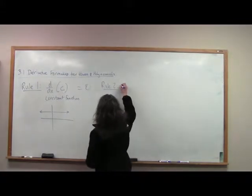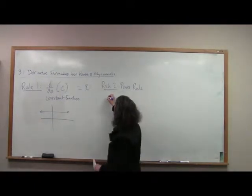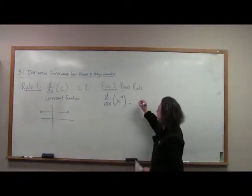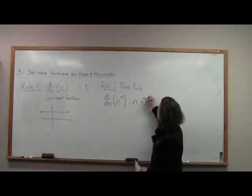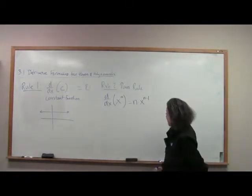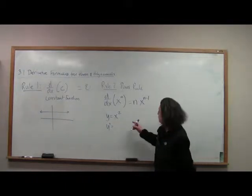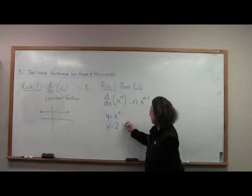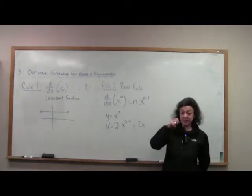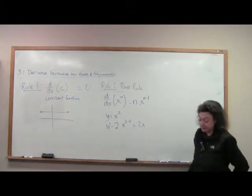Our next rule is very important — it's called the power rule. What the power rule says is that the derivative of x raised to any power n is: bring your exponent down in front, giving you n times x to the n minus first power. For example, if y equals x squared, you bring your exponent down in front and subtract one from your exponent, so the derivative of x squared is 2x — which matches what we've computed before.